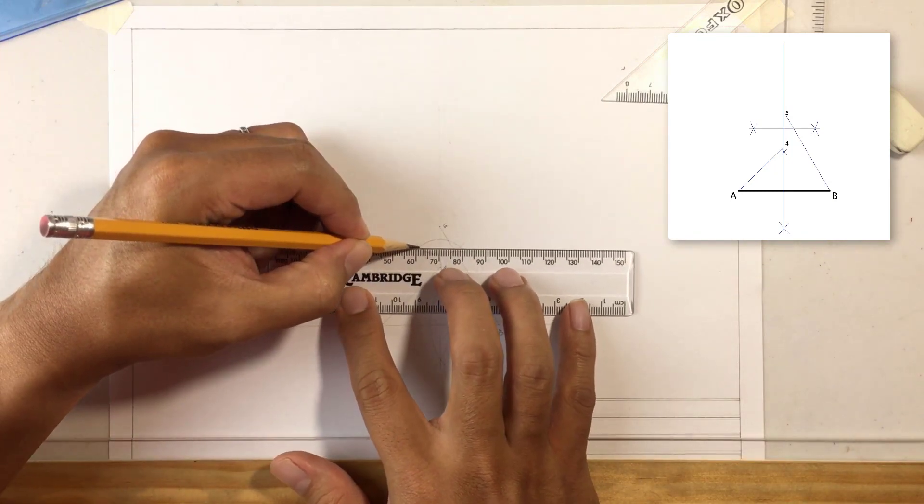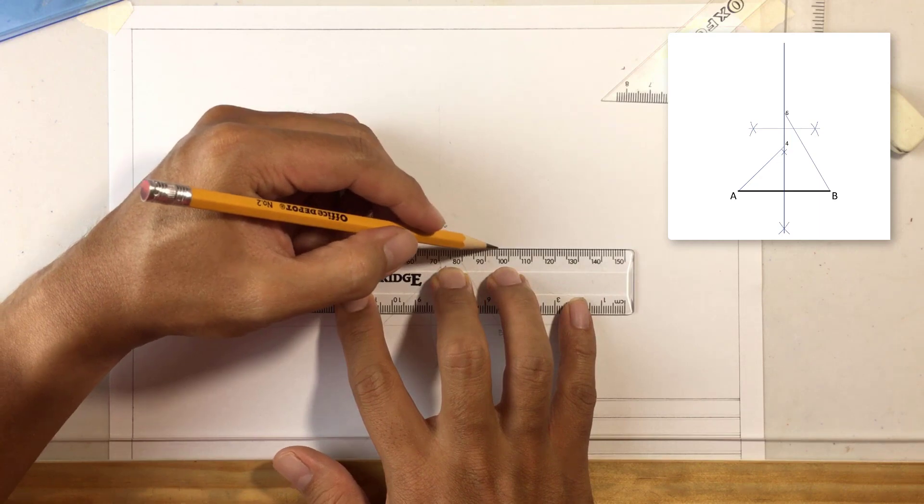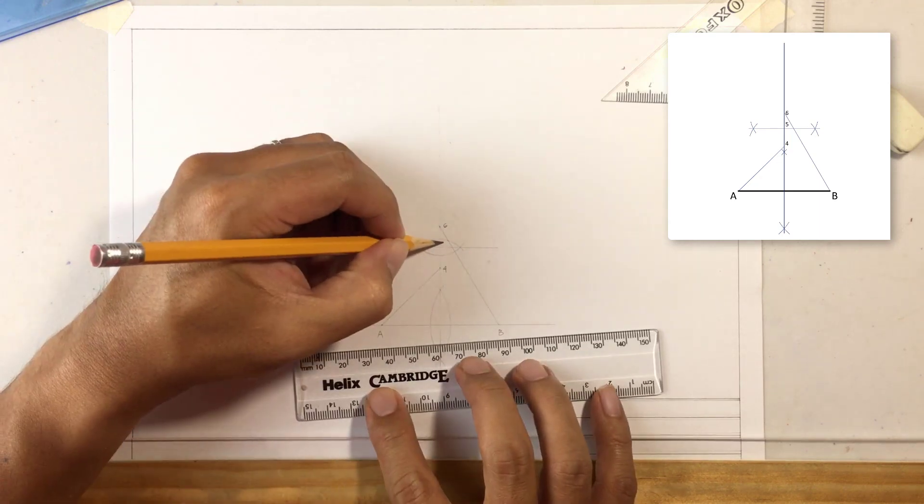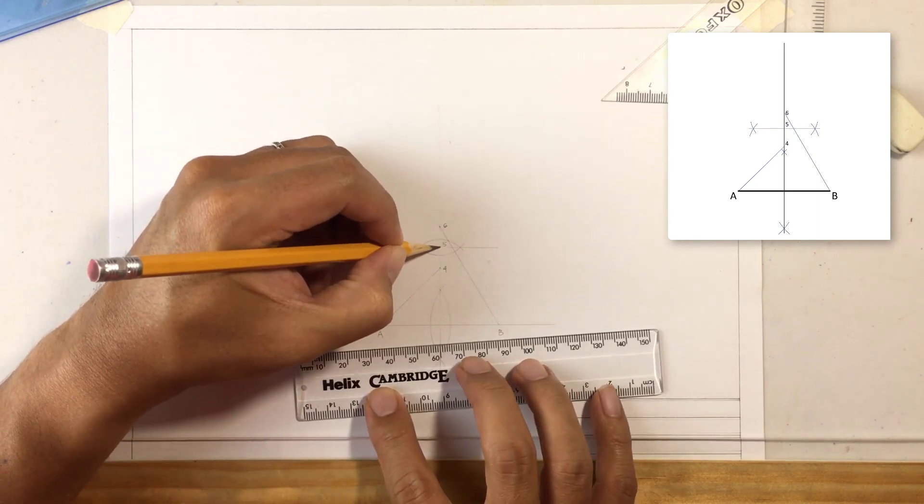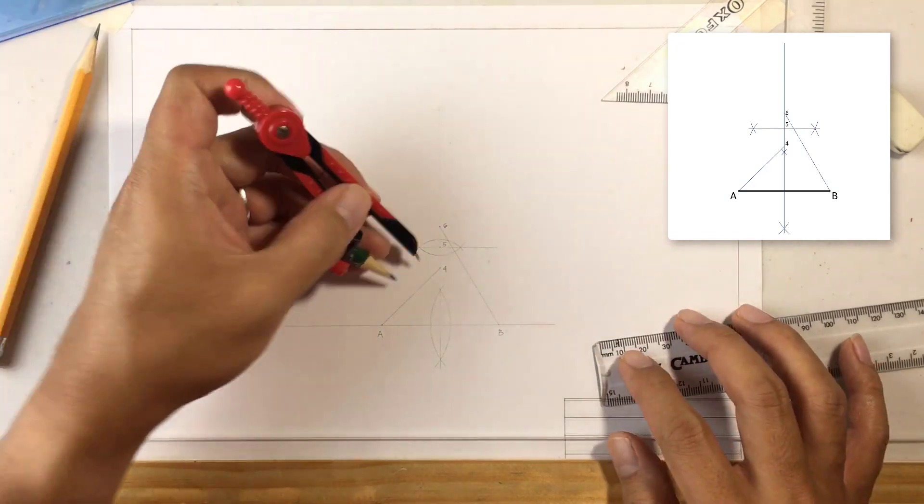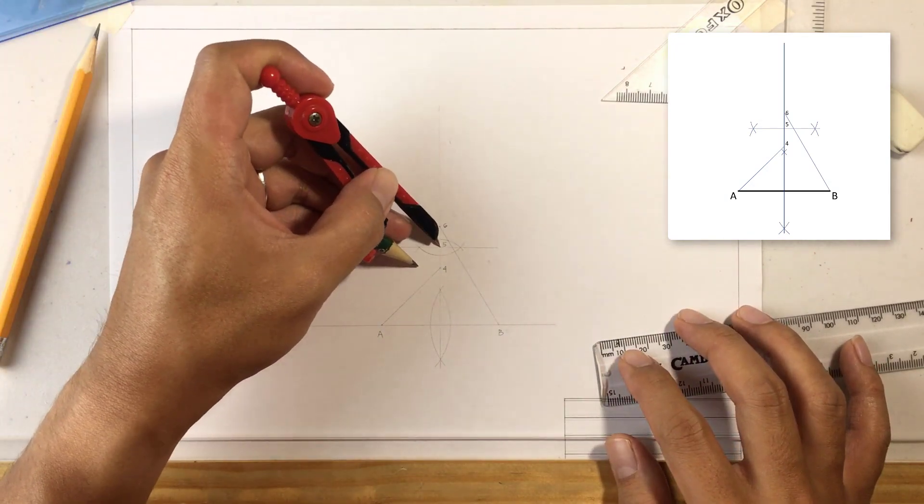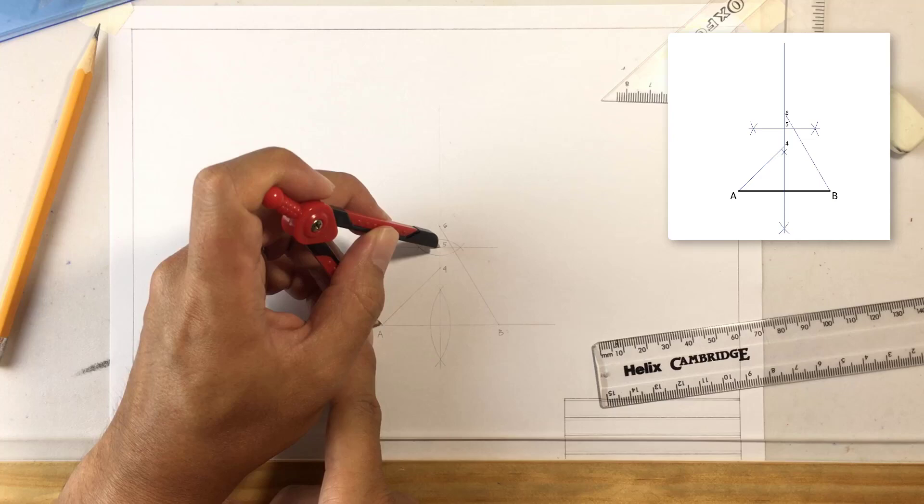Draw the bisector and then once the two bisectors intersect, label it as 5. 5 will be our center point of the circle. Place your compass on 5 and open it to A and then you make the circle.